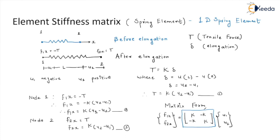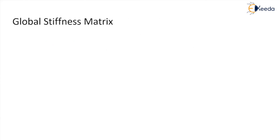Now we want to see how it works at the global level. Instead of only one element, at the global level we take the whole system. Let's understand it with an example involving a combination of more than one element.